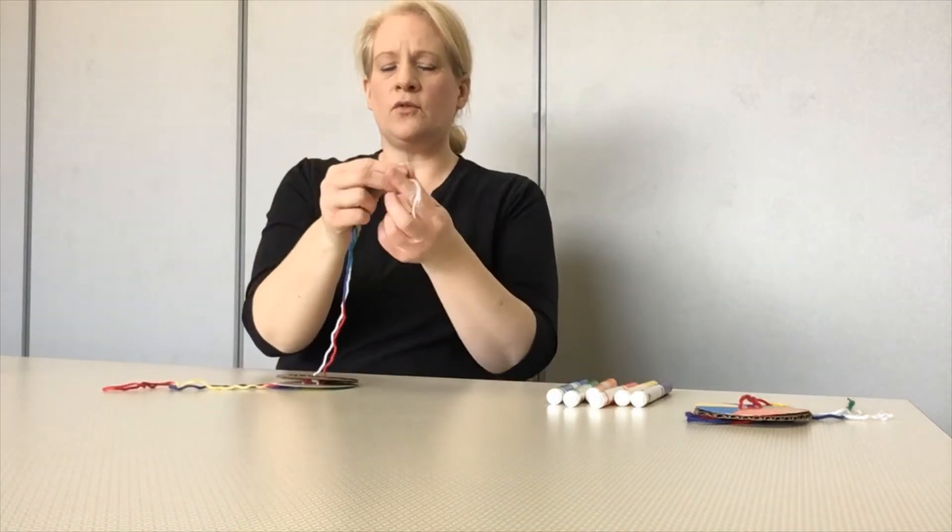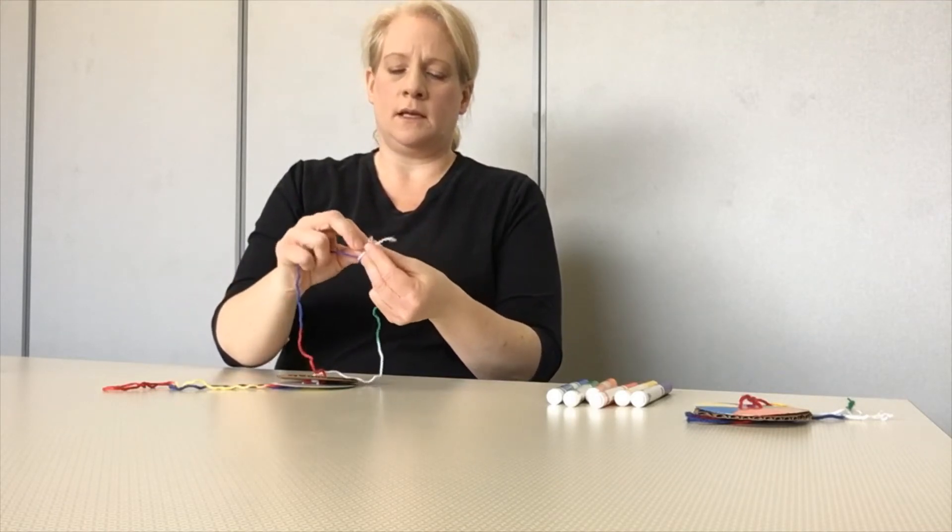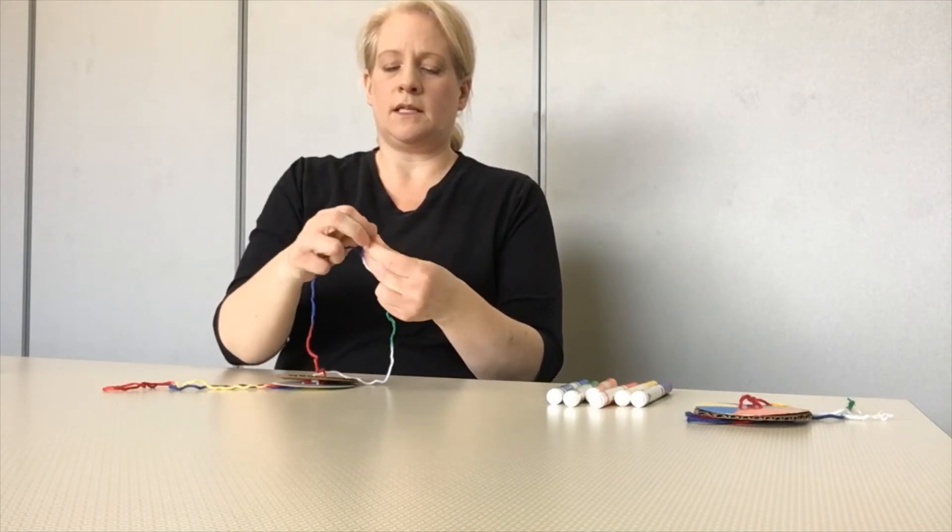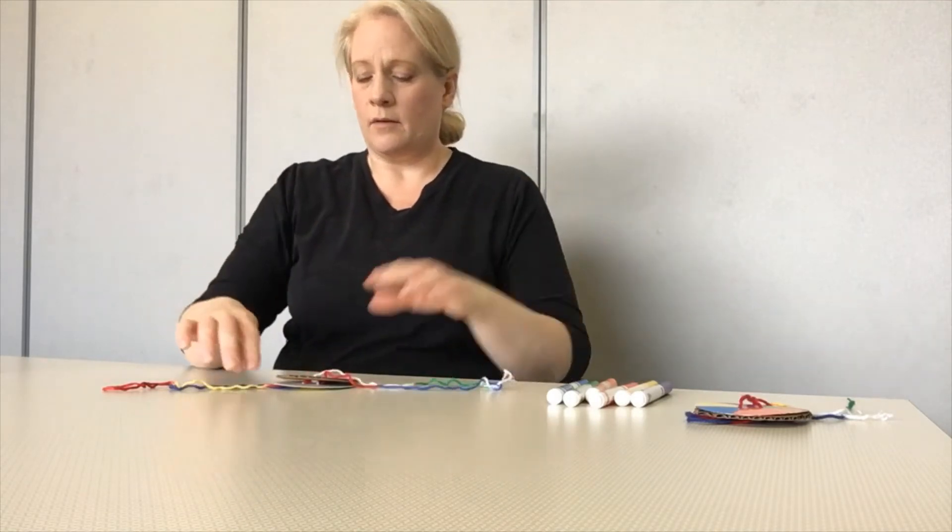Now, on those loose ends of the thread, we need to tie those together. I like to make a double knot, so tie it once and tie it one more time. That way it stays nice and tight and won't come undone when we're trying to spin our circle.